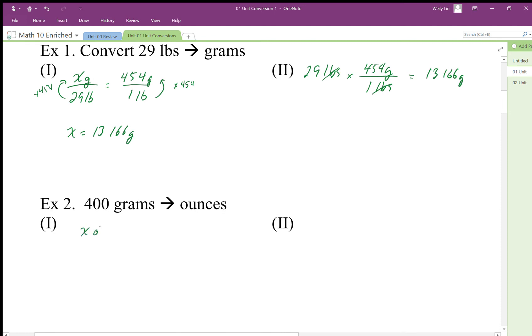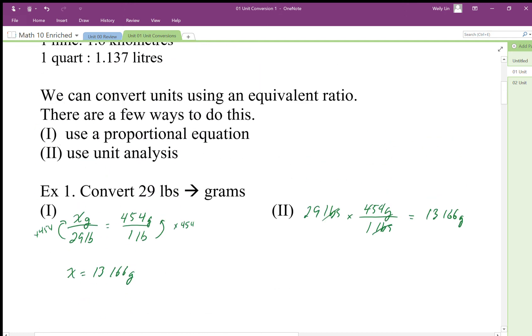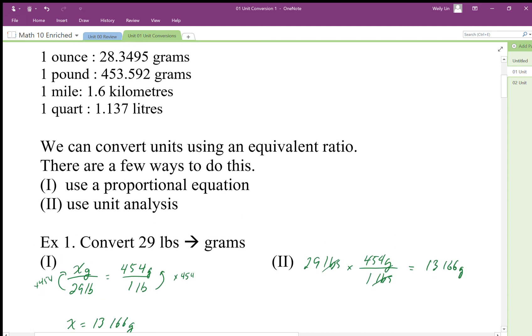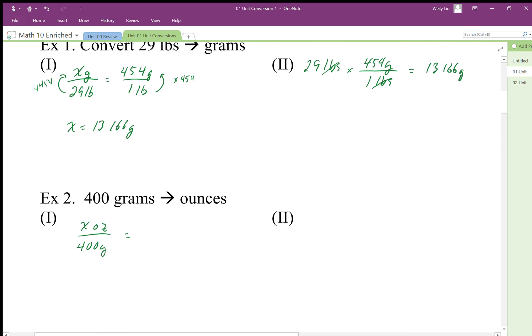We can say an unknown number of ounces to 400 grams. The conversion rate is we'll use 28.3, so we'll go 28.3.